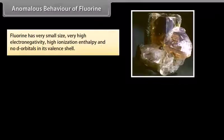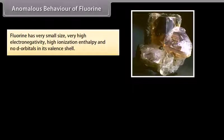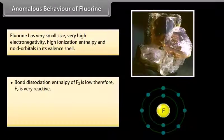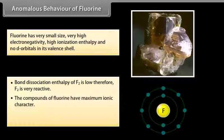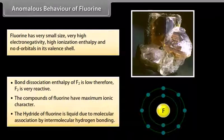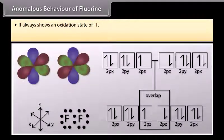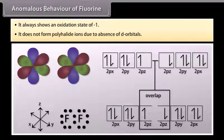Anomalous behavior of fluorine: Fluorine has very small size, very high electronegativity, high ionization enthalpy, and no d-orbitals in its valence shell. It exhibits different behavior in the following ways: bond dissociation enthalpy of F2 is low, therefore F2 is very reactive; compounds of fluorine have maximum ionic character; the hydride of fluorine is liquid due to intermolecular hydrogen bonding; it always shows an oxidation state of -1; and it does not form polyhalide ions due to the absence of d-orbitals.